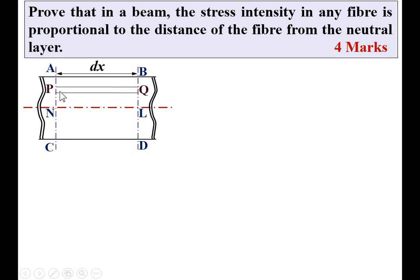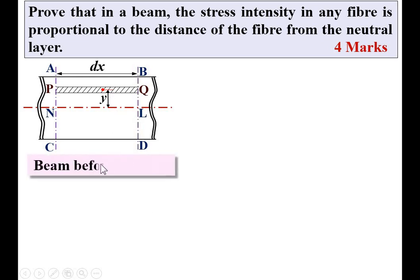I can give the hash line for the strip PQ. The CG of PQ is marked, and the distance of the CG from the neutral layer is y. This is the position of the beam before bending.